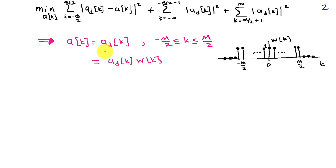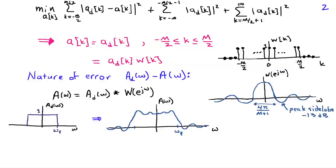To get a_d[k], we take the inverse DTFT of our desired response—the impulse response associated with that real-valued filter frequency response. This minimizes the average squared error between A_d and A of omega. The squared error is on average over the entire interval, and there may be some frequencies where the absolute error is quite large yet it contributes a small amount to the mean squared error.